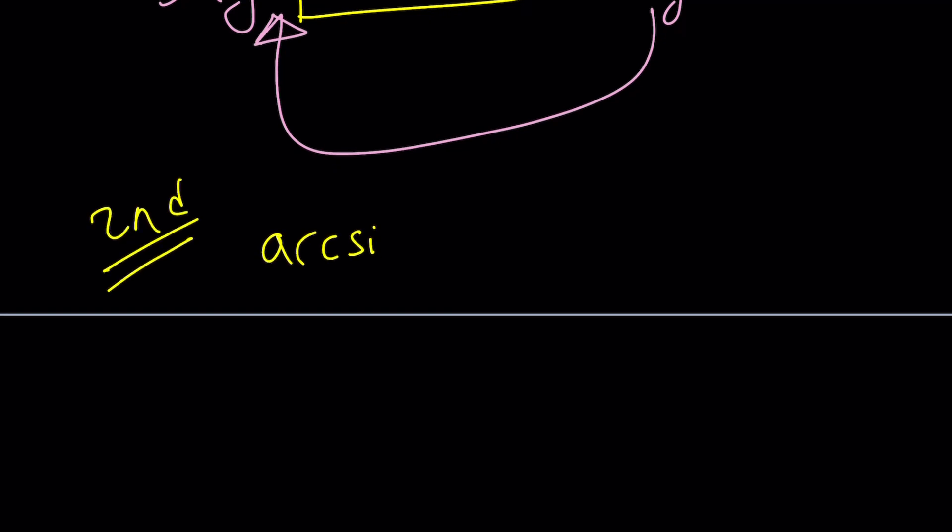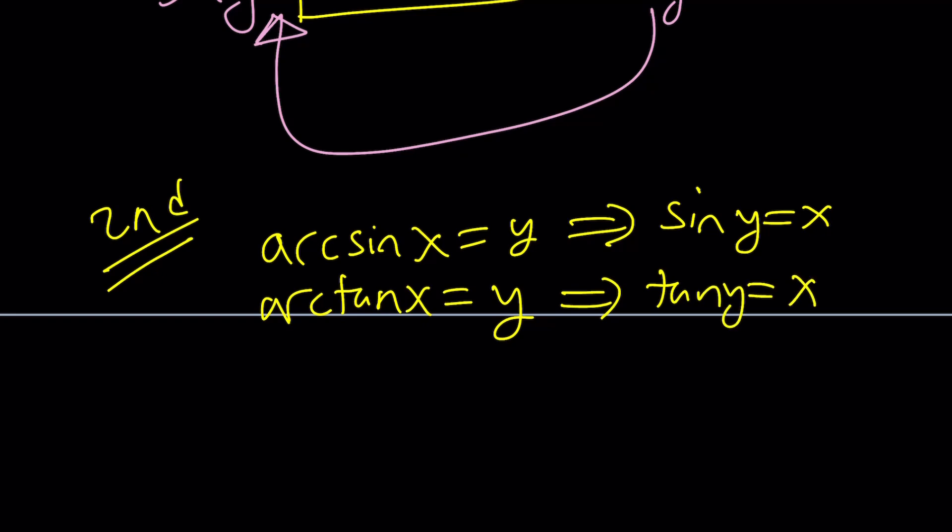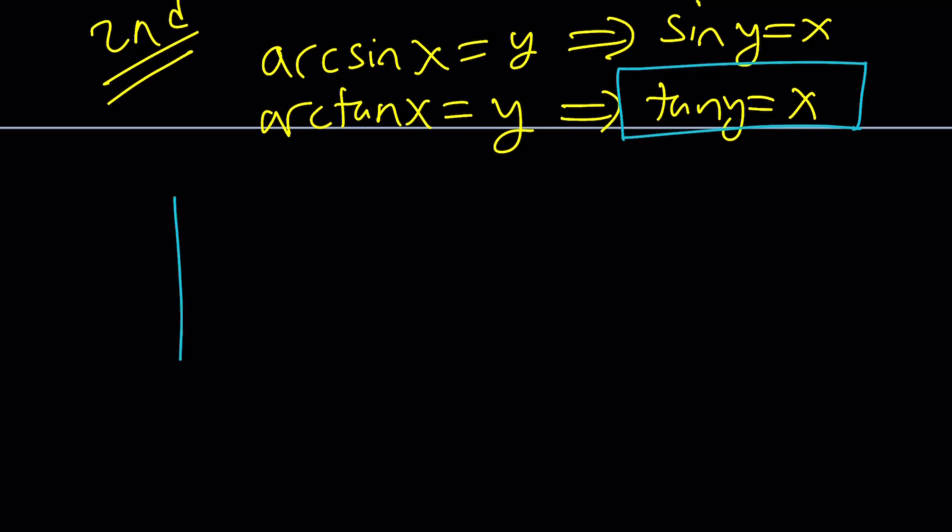Again, we're going to set these equal to y. But we'll proceed a little differently. From here, we get sin y is equal to x, right? And tan y is equal to x. So let's take this and draw a right triangle. I mean, this right triangle doesn't have to exist, but the identities still hold. So let's go ahead and call this y.